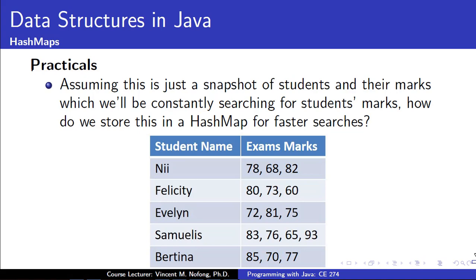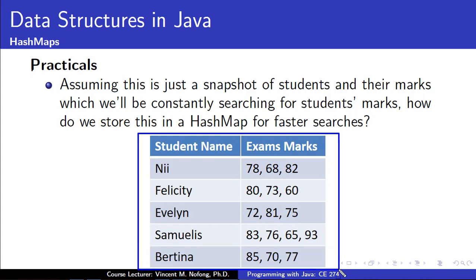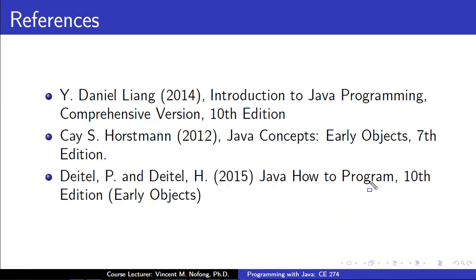During our practicals, we will play with this table. We are assuming that this is a list of students — the student name will be the key and their exam marks will be the values stored in our HashMap. For example, a student called Ni has three exam scores: 78, 68, and 82. The name Ni becomes the key and the exam marks become the values. That is it for the theory; we will now go to the practicals to see how it goes.